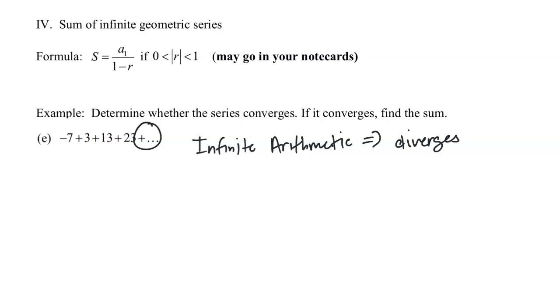They're always going to either increase or decrease without bound, which means that they will diverge. And so once you figure out that it's infinite arithmetic, you're done. You can say that it diverges and move on. Just as a reminder, though, finite arithmetic series will have a value, and we talked about those formulas earlier in the notes.